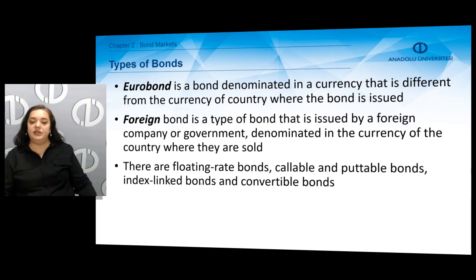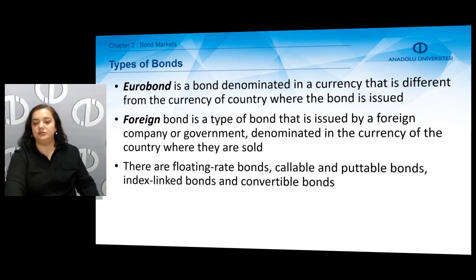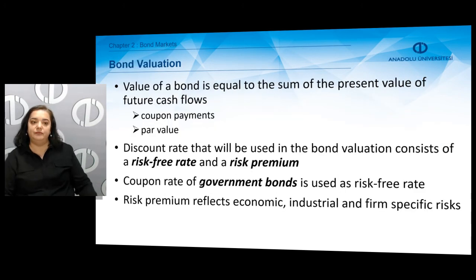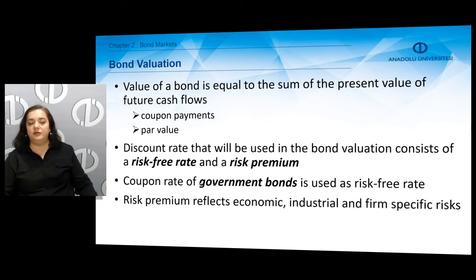There could also be floating rate bonds, callable bonds, putable bonds, as well as index-linked bonds and convertible bonds. You can refer to the details of these types of bonds in the book. How can we determine the value of a bond? The value of a bond is equal to the sum of the present value of the future cash flows that the bond holder expects to receive — the economic, intrinsic, or real value of the bond.